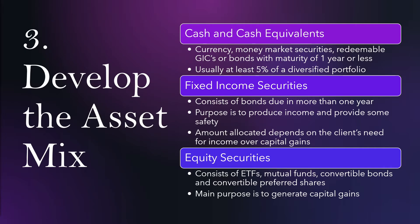Equity securities consist of ETFs, mutual funds, convertible bonds, and convertible preferred shares. The main purpose is to generate capital gains. You will see a lot of growth within equity securities like stocks. They are more risky than the other two asset classes, but they tend to provide higher returns in the long run.